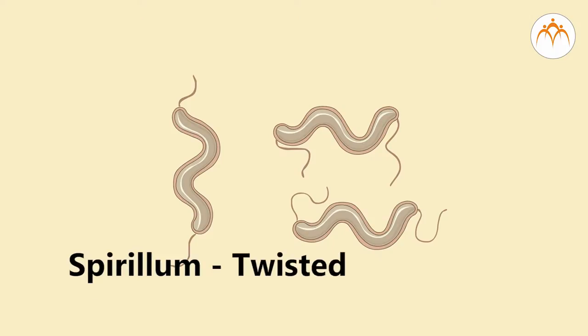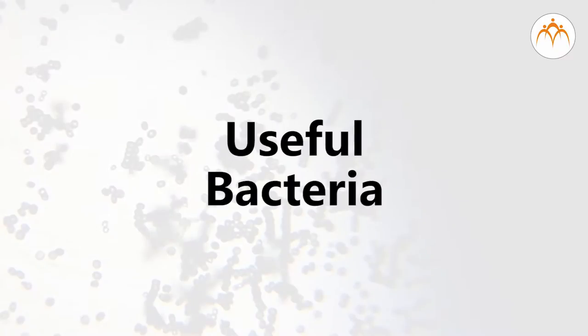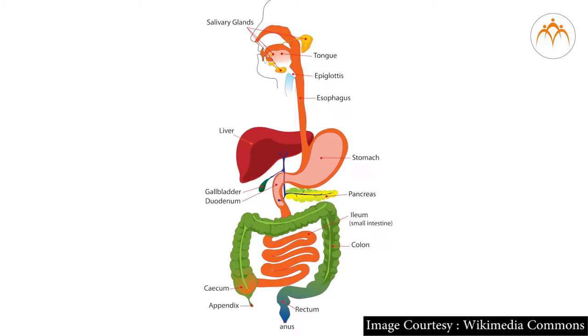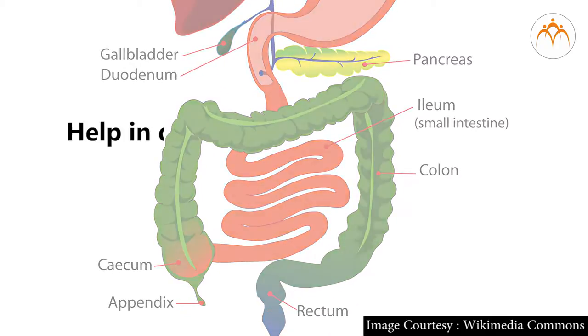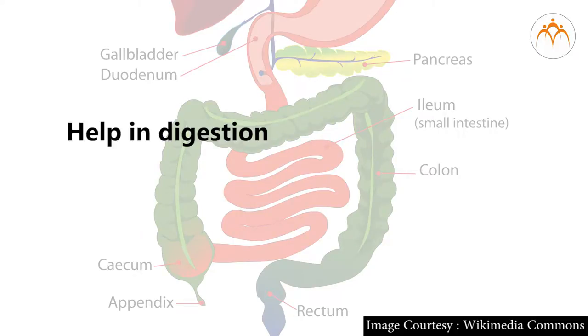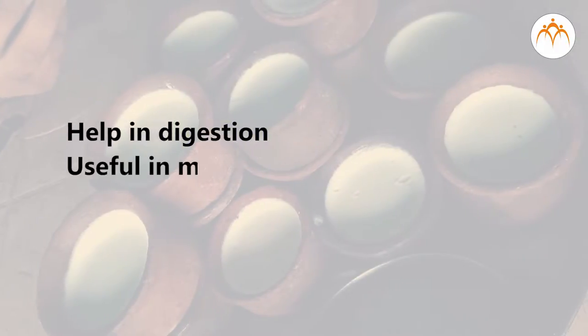Spirillum are twisted and Vibrio are comma-shaped. Though we cannot see bacteria, they play an important role in our lives. Some useful bacteria: bacteria present in our intestine help in digestion, and bacteria are useful in making curd, idli, and similar foods.